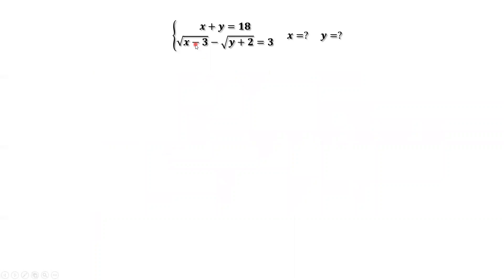From the second equation, we can see that's the difference of two square roots. If we want to get rid of the square root signs, we have to square both sides twice. It will make this equation more complicated.